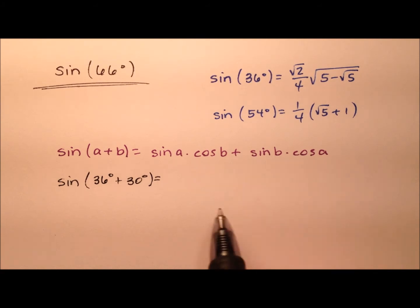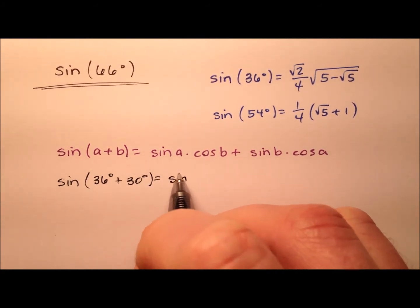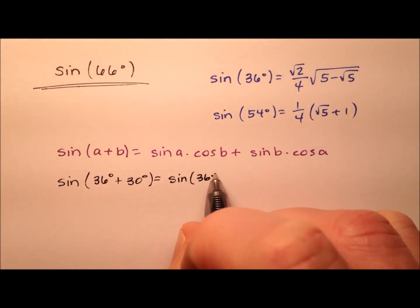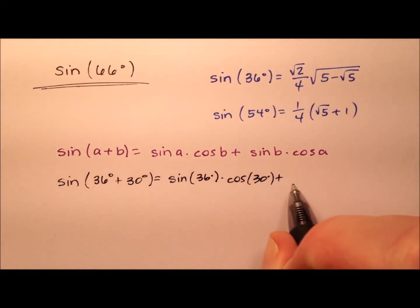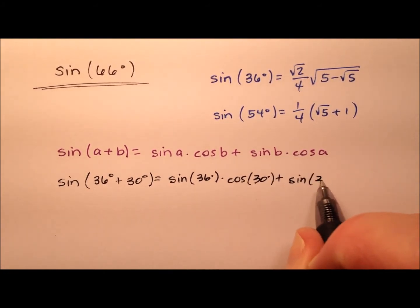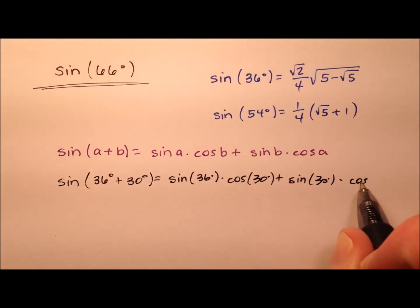So let's go ahead and write this expansion. It'll be the sine of 36 degrees times the cosine of 30 degrees plus the sine of 30 degrees times the cosine of that 36 degrees.